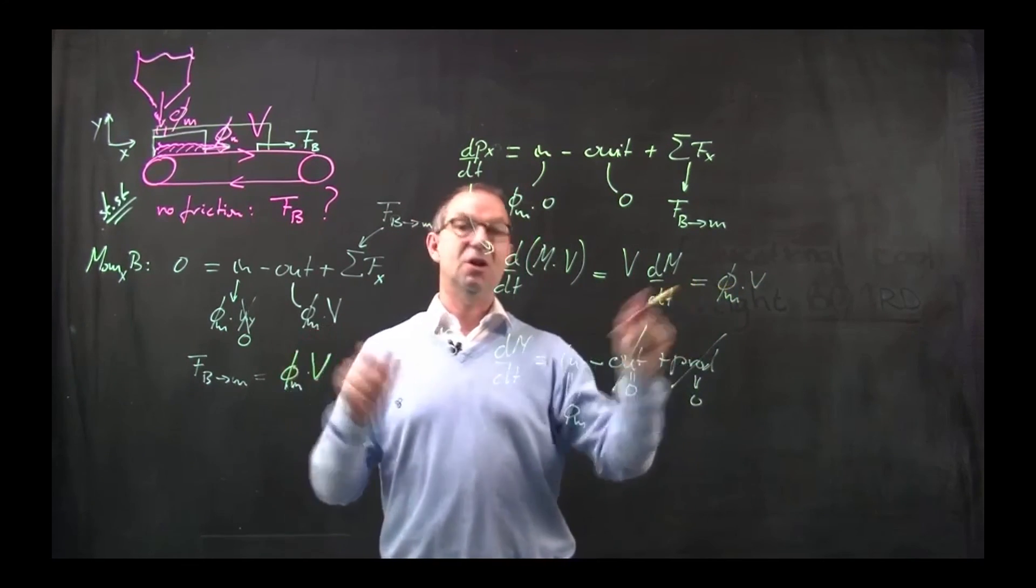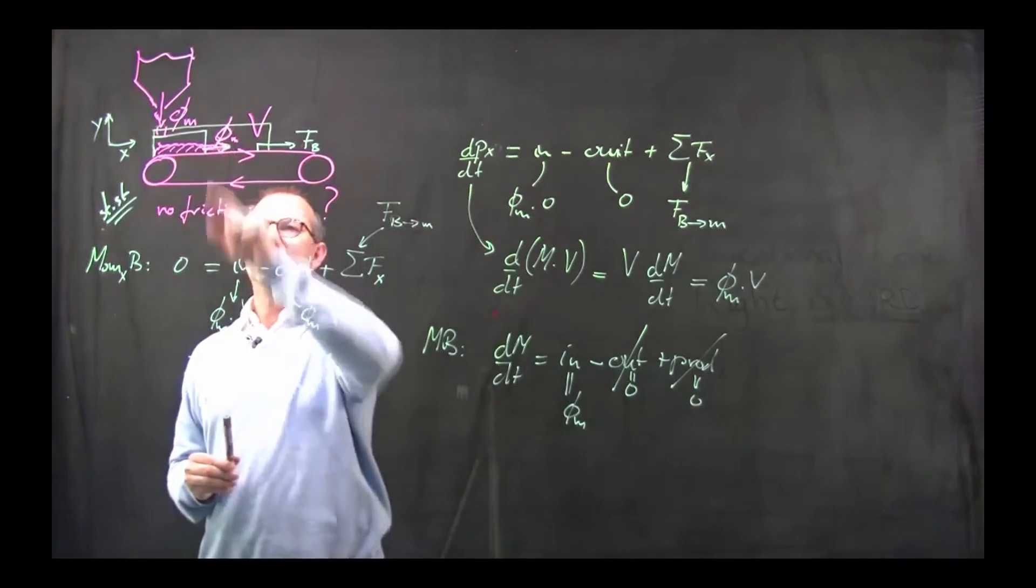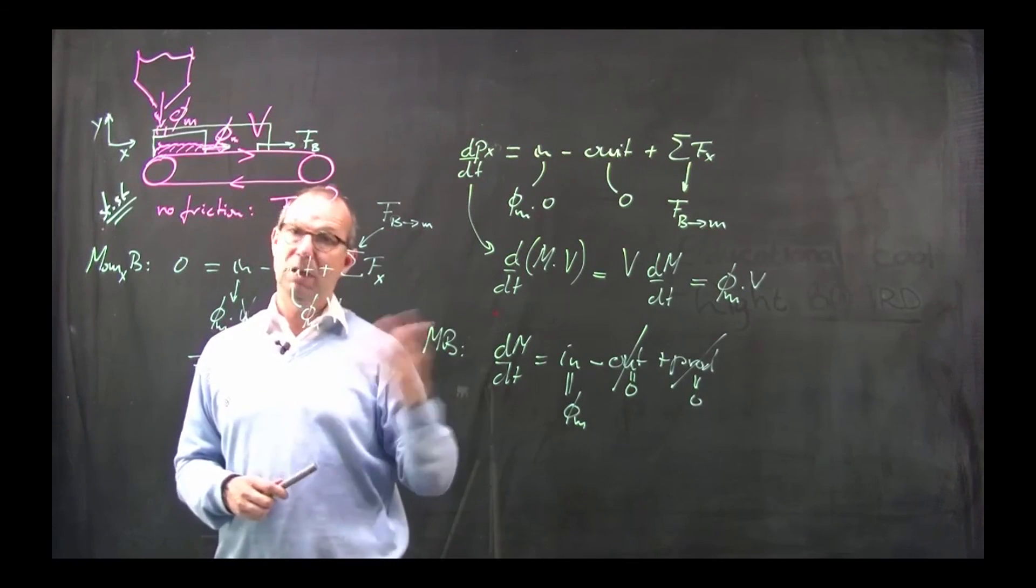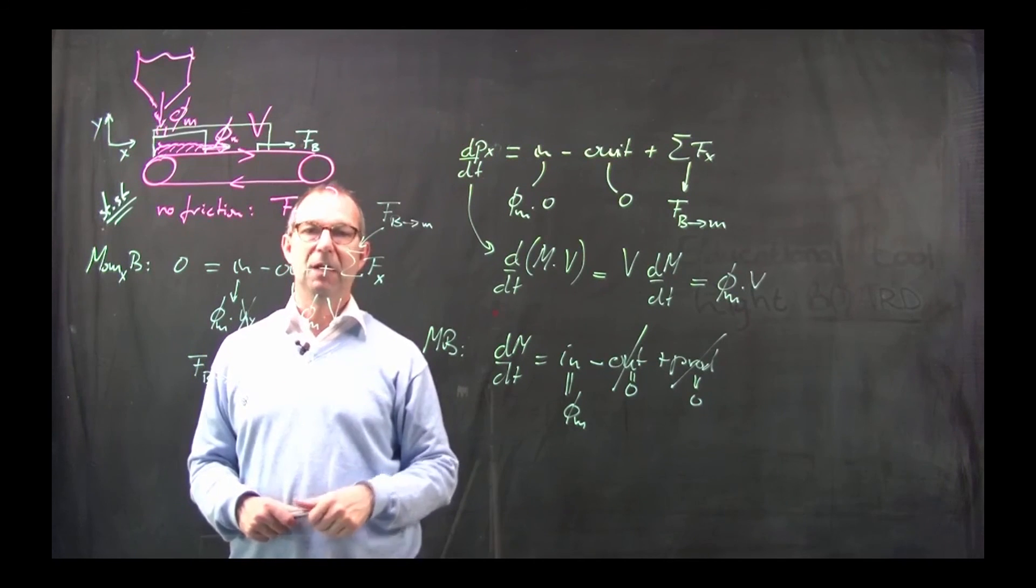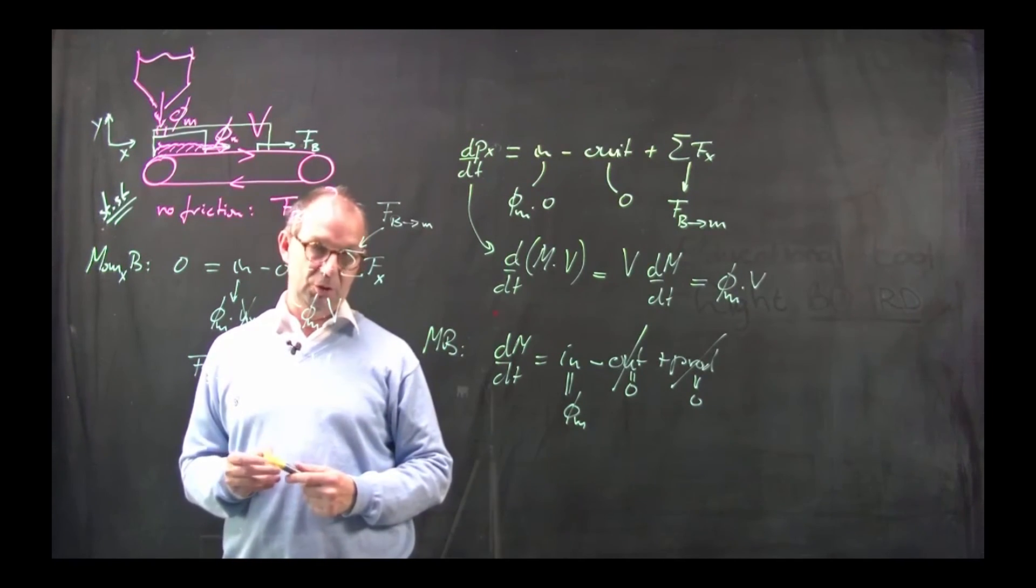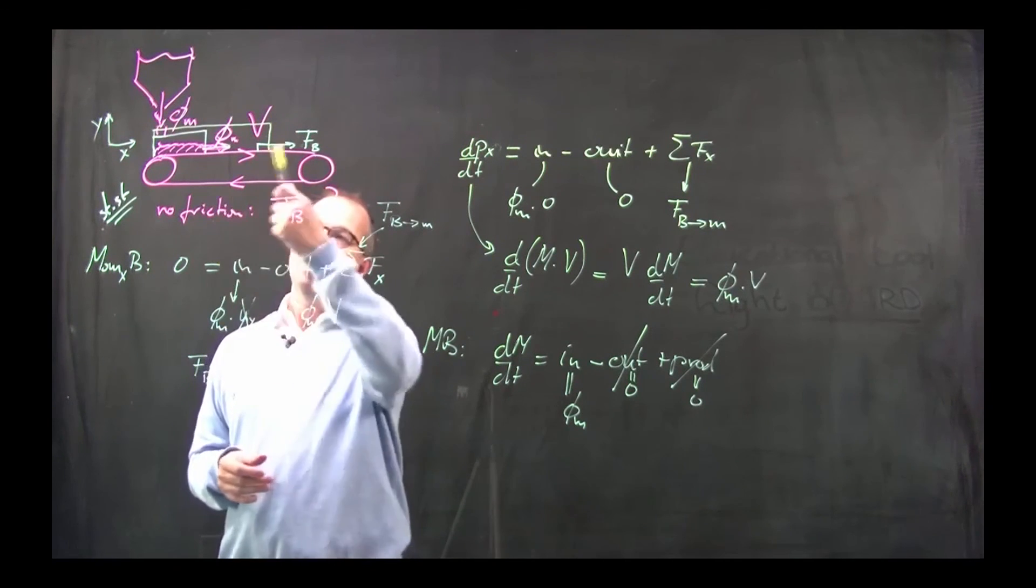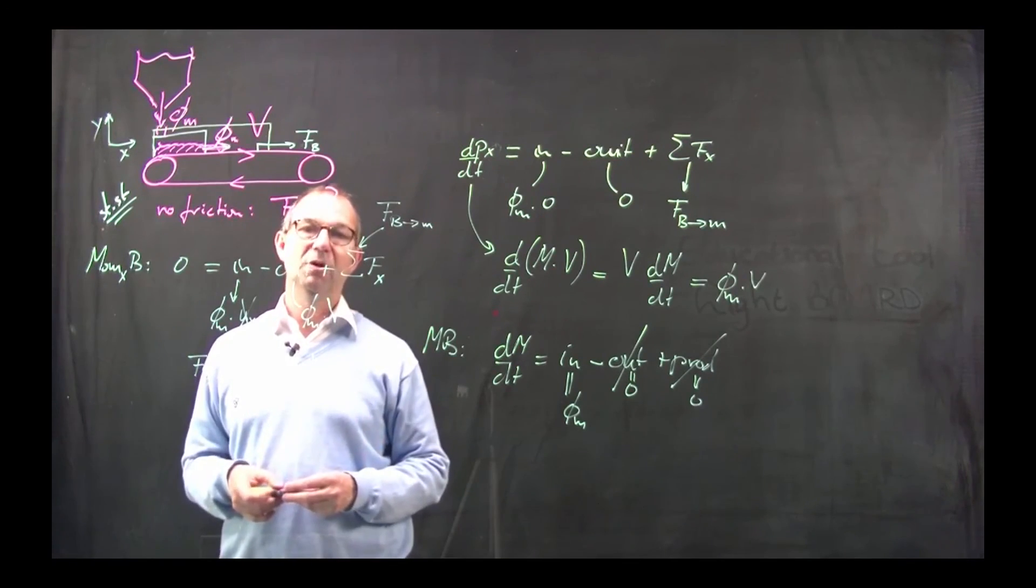And you see that the answers are identical. It doesn't matter whether at the pink case I take a small control volume or a big control volume. Obviously the same force has to be applied to keep the belt going. This gives you another example what you can do with momentum balances. So it's not restricted to gases or liquids. Even flowing granular material can be dealt with with a momentum balance.